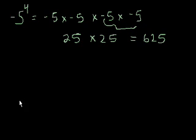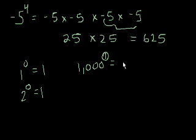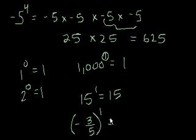One thing to remember: anything to the zeroth power equals 1. So 1 to the zero power equals 1, 2 to the zero power equals 1, 1,000 to the zero power equals 1. And anything to the first power just equals the number itself. So 15 to the first power equals 15, and negative 3 fifths to the first power equals negative 3 fifths.